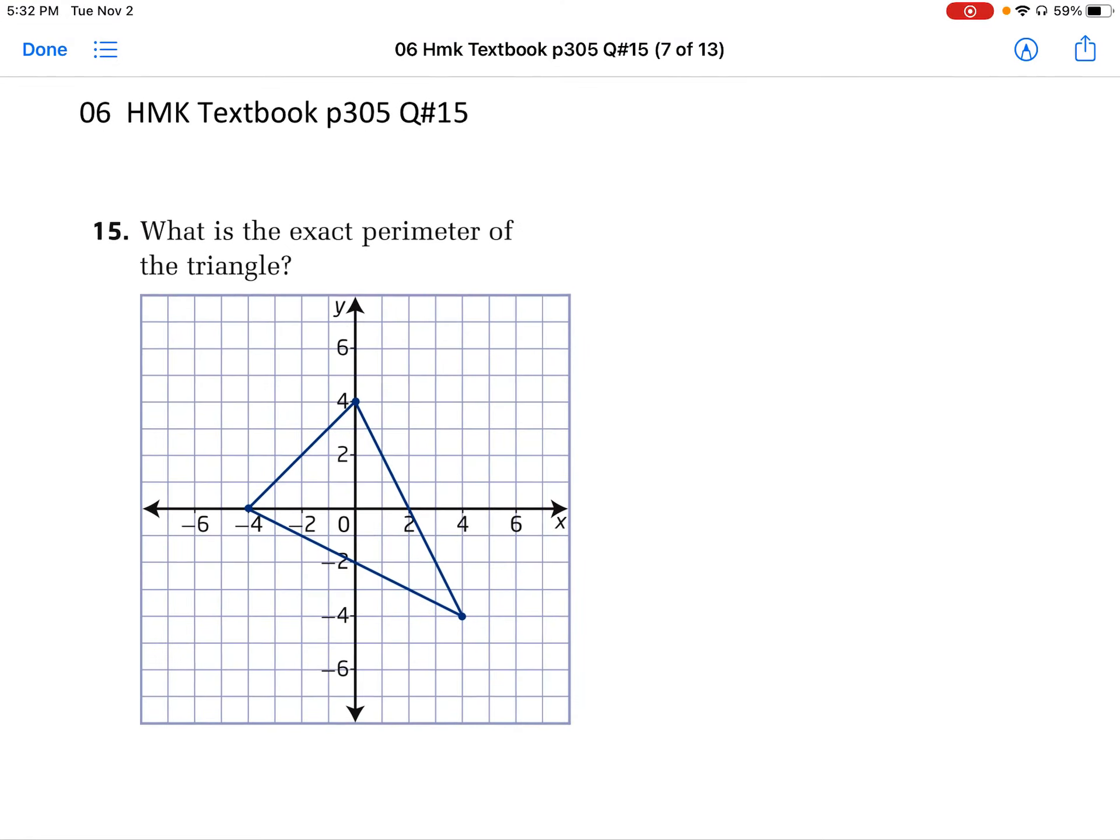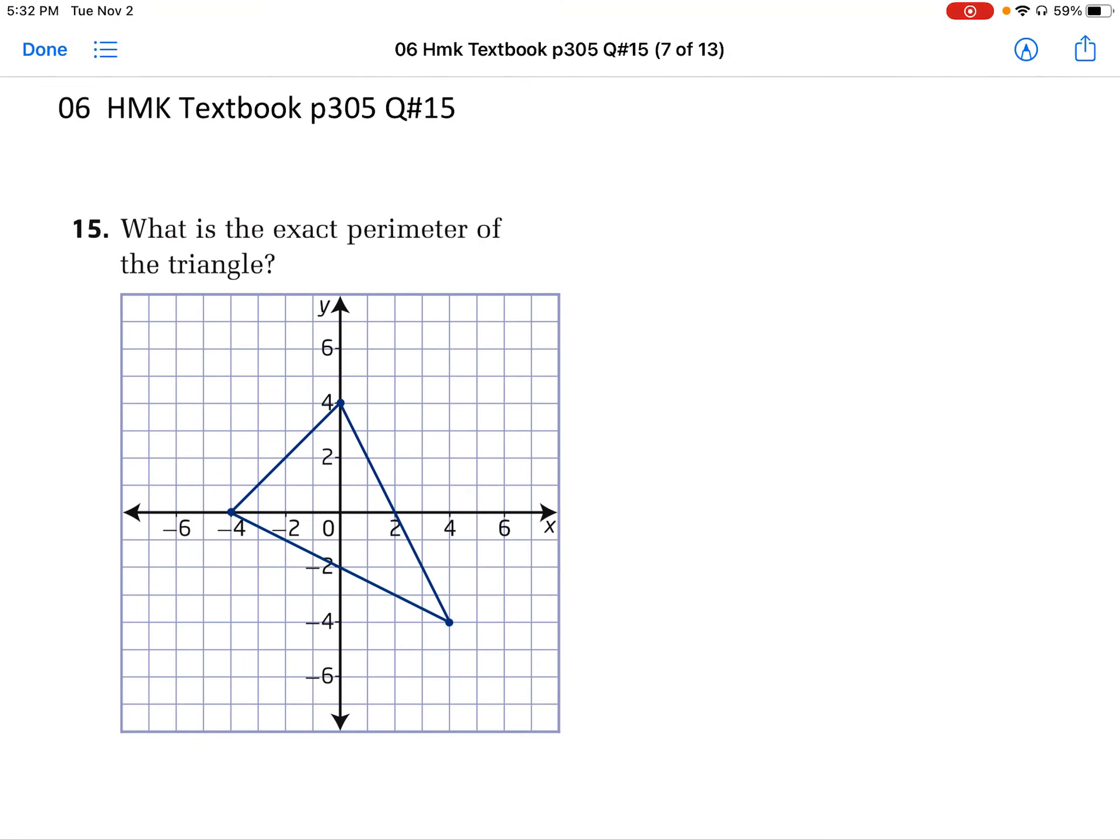To work out the exact perimeter of this triangle, we need to use Pythagoras to work out those diagonal lines. So we'll do this in three different parts. So we're going to do this line here using Pythagoras.